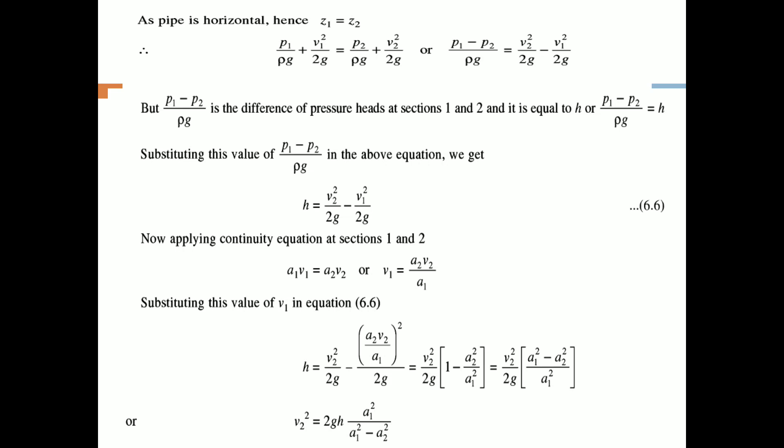P1 minus P2 divided by rho G is the difference of pressure head at sections 1 and 2, and is equal to h. Substituting h into the equation: h equals V2 squared by 2G minus V1 squared by 2G. Now applying the continuity equation at sections 1 and 2: A1 V1 equals A2 V2, so V1 equals A2 V2 by A1.